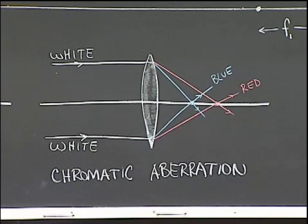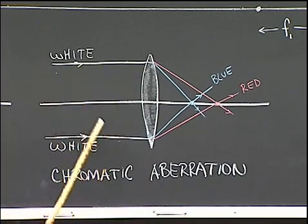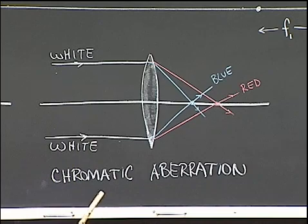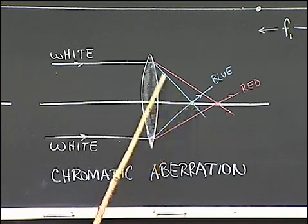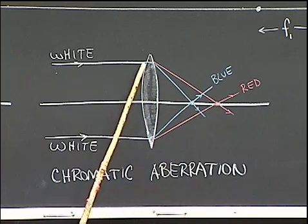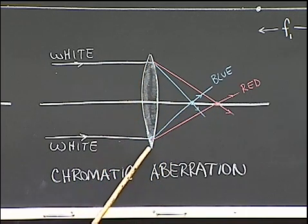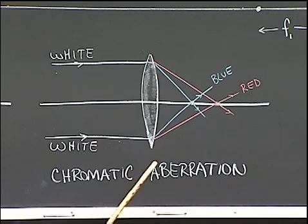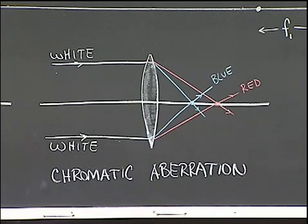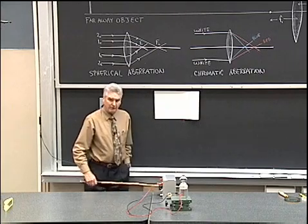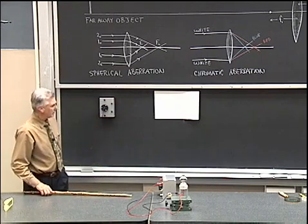Chromatic aberration is where you have, for example, white light come in — two parallel beams of white light parallel to the axis — and blue light has a shorter focal point than does red light. So because of dispersion, the light will spread out into its component colors, and we have an ambiguous focal point because of the coloring that takes place. We call that chromatic aberration. All of the other colors would be in between, so we have a whole series of focal points for the different colors.